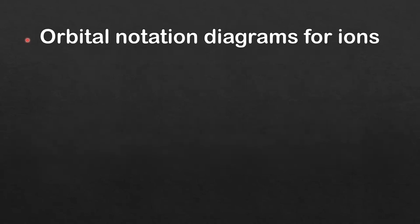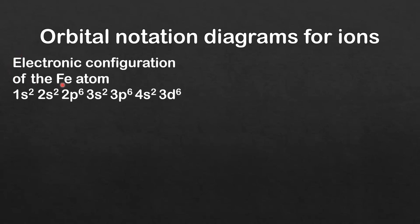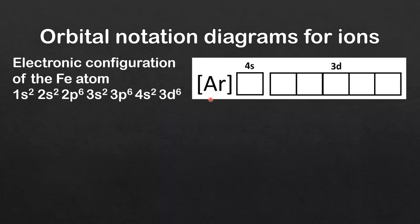Next we look at orbital notation diagrams for ions. The electronic configuration of the iron atom is 1s2, 2s2, 2p6, 3s2, 3p6, 4s2, 3d6. Using the abbreviated electronic configuration, what remains is the 4s and 3d electrons. The 4s orbital fills before the 3d orbitals, so we put 2 electrons there. The 3d sublevel is composed of 5 degenerate d orbitals. According to Hund's rule, we fill these singly with the same spin first, then go back and place the remaining electron in the first orbital.